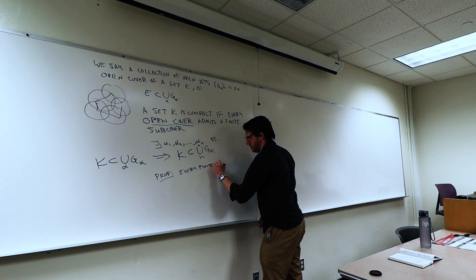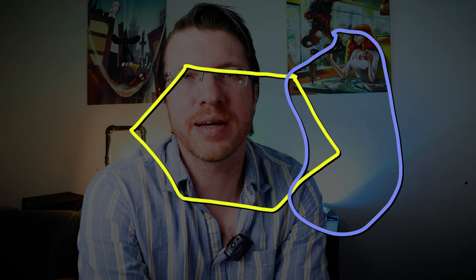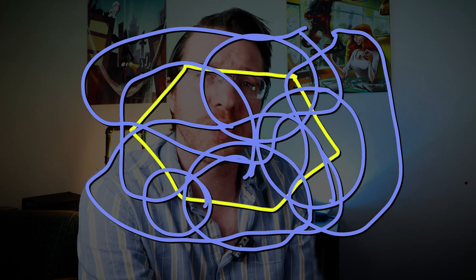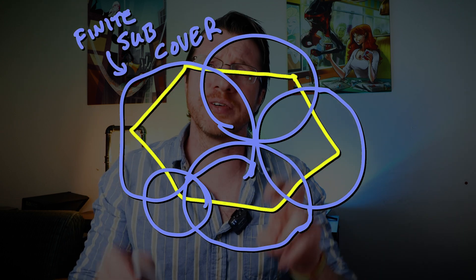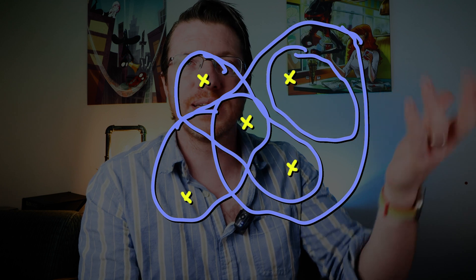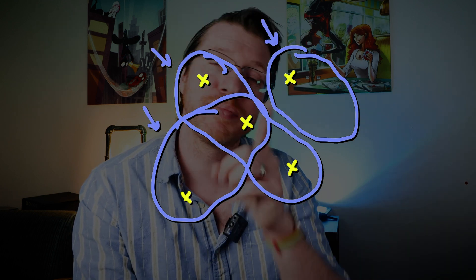So now let's talk about the actual definition. A compact set is a set where if you can cover it with a collection of open sets — we call this an open cover — then you can also cover that compact set with a finite number of those same open sets. We call this a finite subcover. A first example of a compact set is finite sets. If you have an open covering of a finite number of points, each point must be within at least one open set. Take one set for each point, and that's a finite subcover.